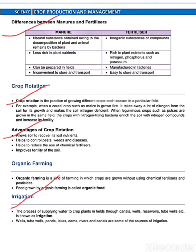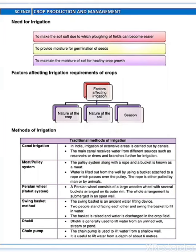Then after irrigation. It is the process of supplying water to the crop plants from different sources. Need for irrigation: to make the soil soft, to provide moisture, and to maintain the moisture of the soil for healthy crop growth. Now factors affecting irrigation: nature of the crop, nature of the soil, and season.